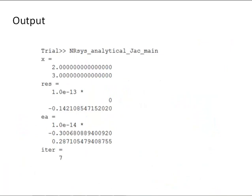And let's look at our final output here. So, we see our final values of x are 2 and 3, and a residual on the order of 10 to the minus 13, and the error we did way better than our stopping criterion on that last iteration. Our error is on the order of 10 to the minus 14, our final approximate relative error, and the method converged in 7 iterations.